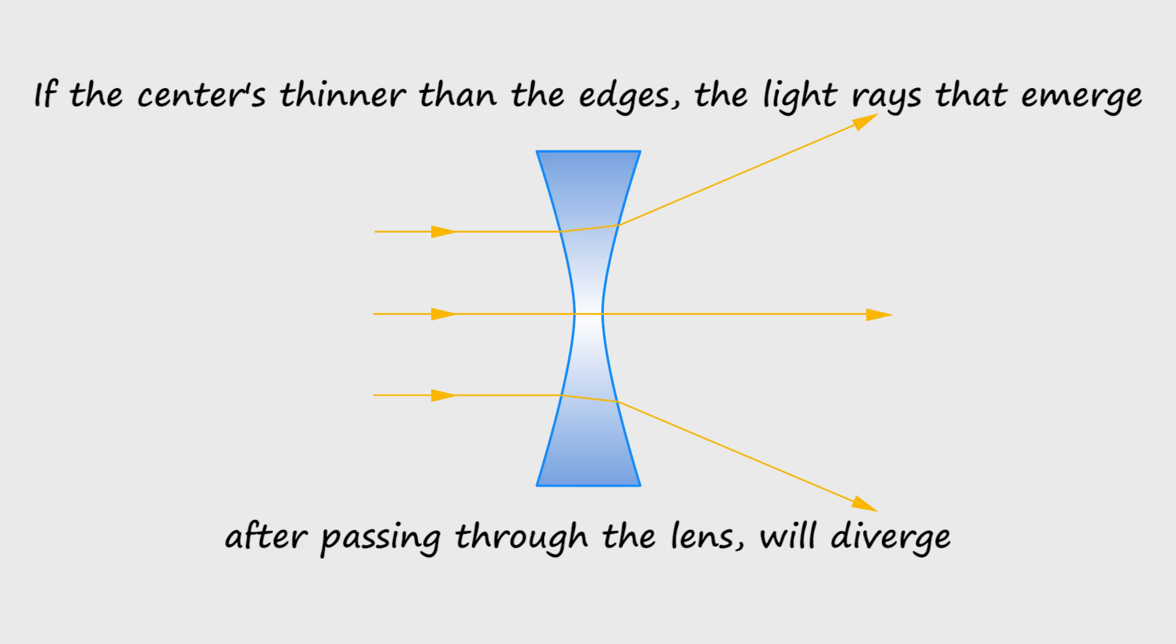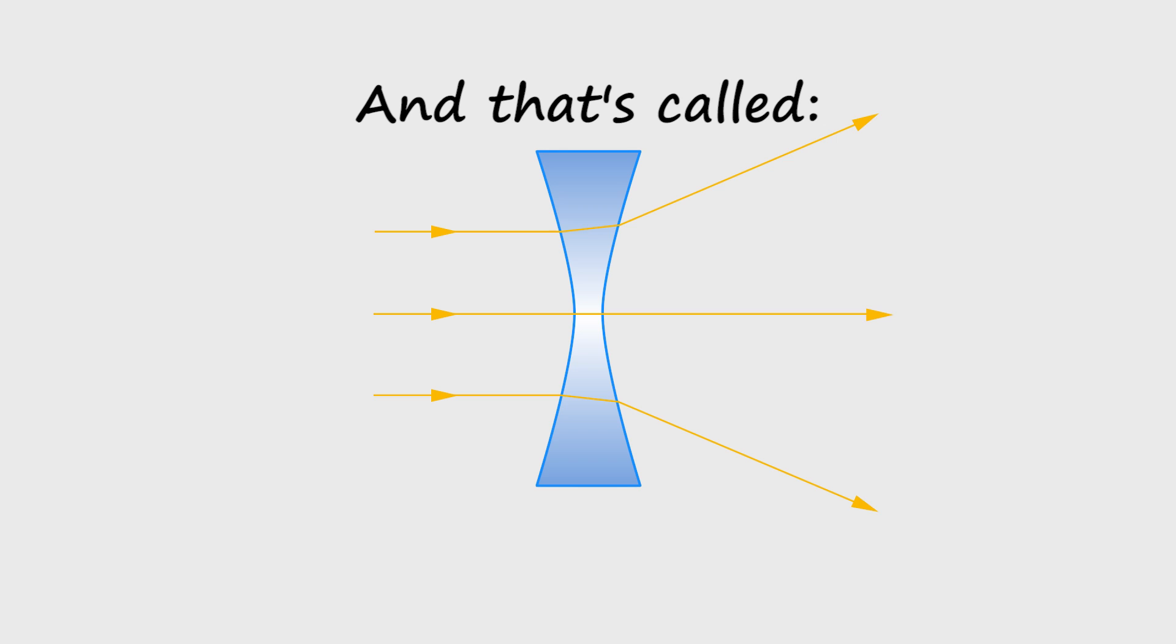If the center is thinner than the edges, the light rays that emerge after passing through the lens will diverge. That's called a concave lens.